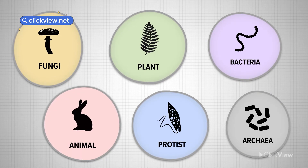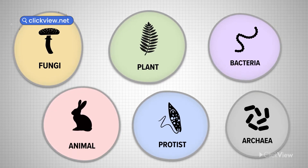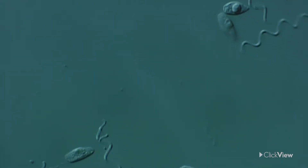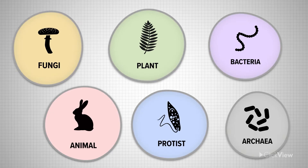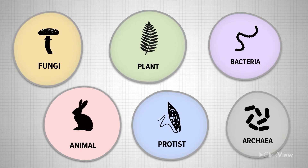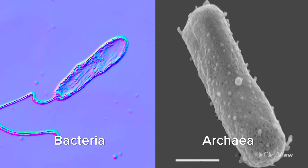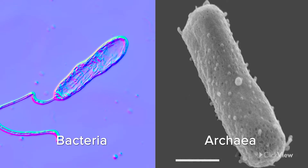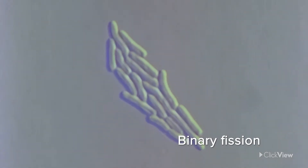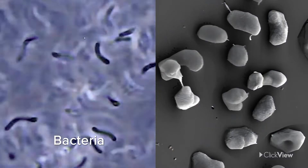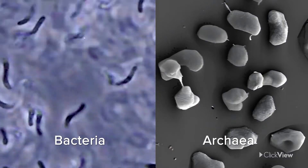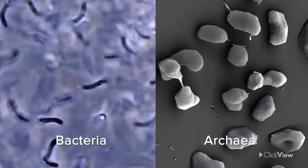Organisms placed in each kingdom have certain basic similarities, such as their external and internal structures, their means of obtaining nutrition, and their methods of reproducing. These provide the characteristics for defining each kingdom. Bacteria and archaea have some similarities — they are both single-celled microorganisms without a nucleus, and like protists, they usually reproduce by binary fission. However, they are biochemically very different from each other and live in very different environments.